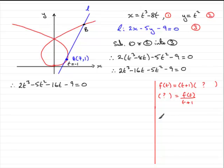So I'll put t plus 1 in here. We'll do our division sum. We've got 2t cubed minus 5t squared minus 16t minus 9. So in the usual way, what do you multiply t by to give 2t cubed? And you find it's 2t squared.